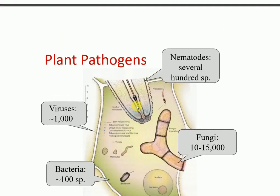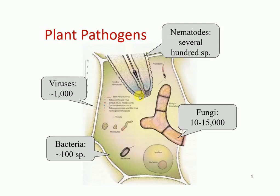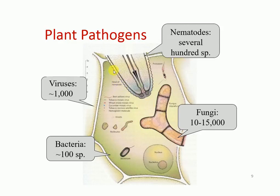Let me give some general knowledge about plant pathogens. On Earth, we have discovered several hundred species of nematodes, fungi account for about 10,000–15,000 species, viruses around 1,000 species, and several hundred species of bacteria. A picture here shows the germ tube — how the pathogen enters the epidermis through the germ tube of the plant, and the hypha further enables the pathogen to cause disease development.